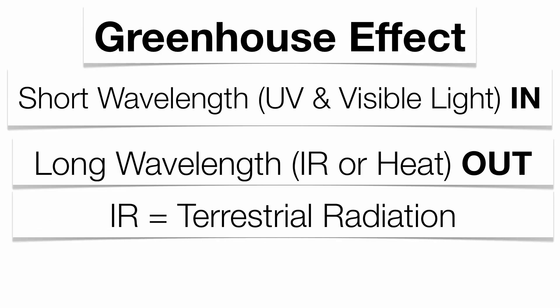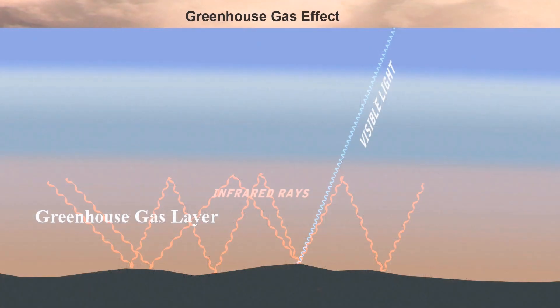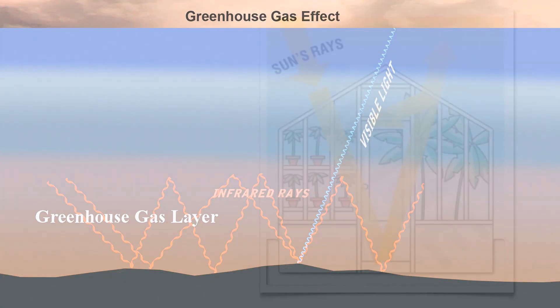The problem is that this terrestrial radiation gets trapped in the atmosphere. Usually you would want that energy to escape back out into space to keep a balance, but something in the atmosphere is trapping the heat energy. That infrared energy is getting trapped in by what we call the greenhouse gas layer. Visible light comes in, infrared tries to leave, but it can't — that greenhouse gas layer is the problem.